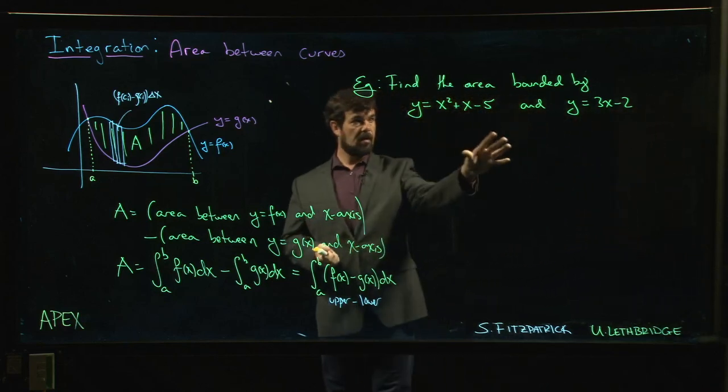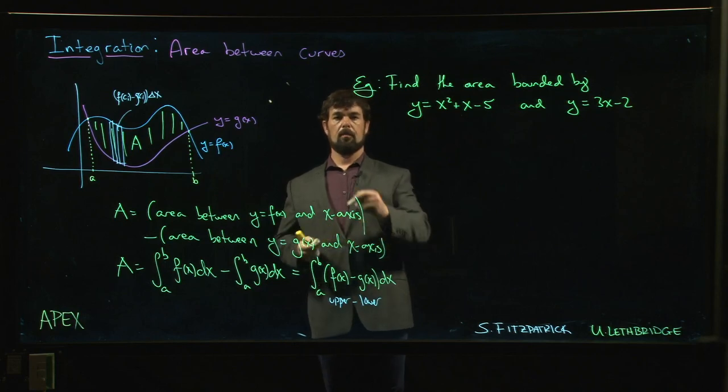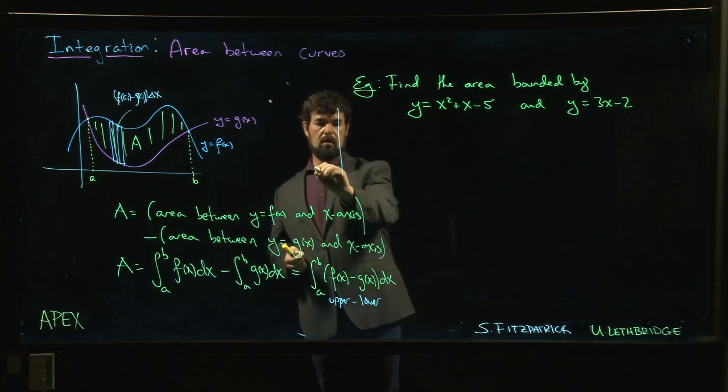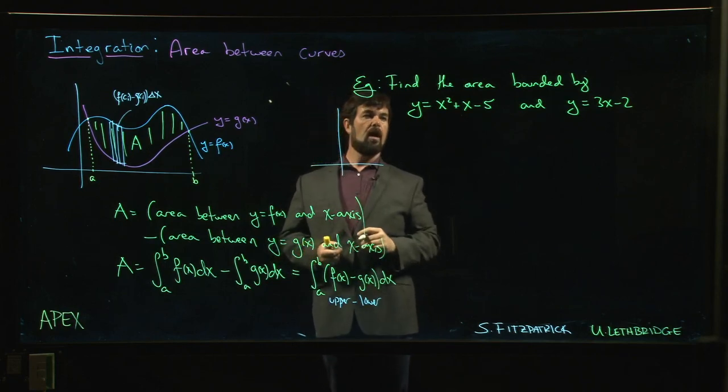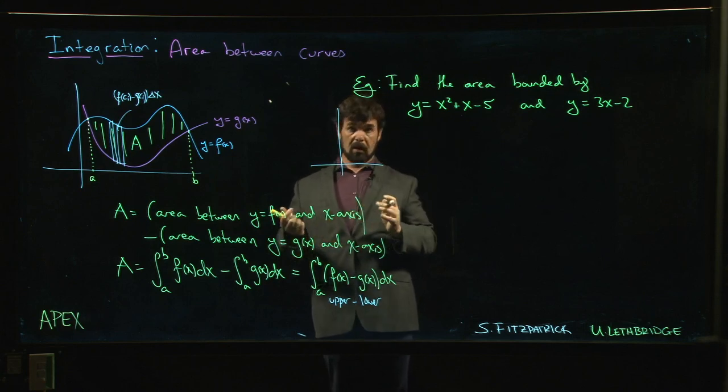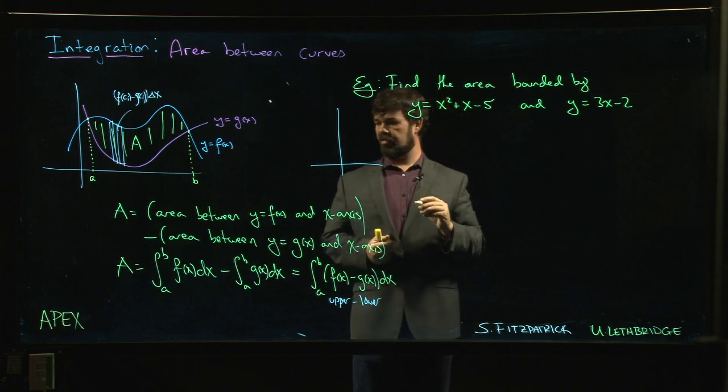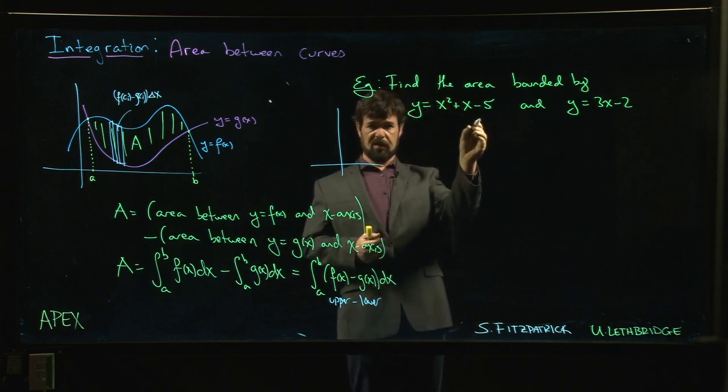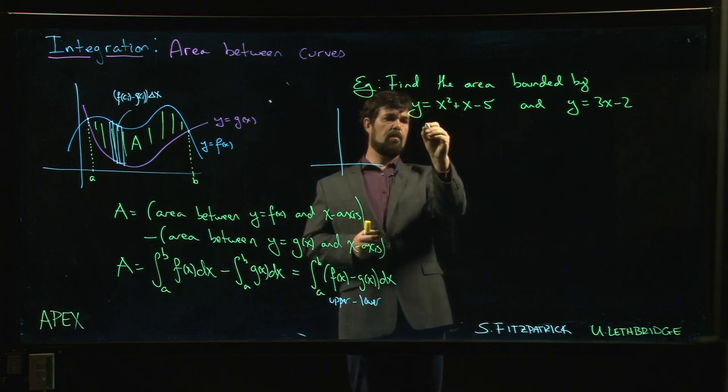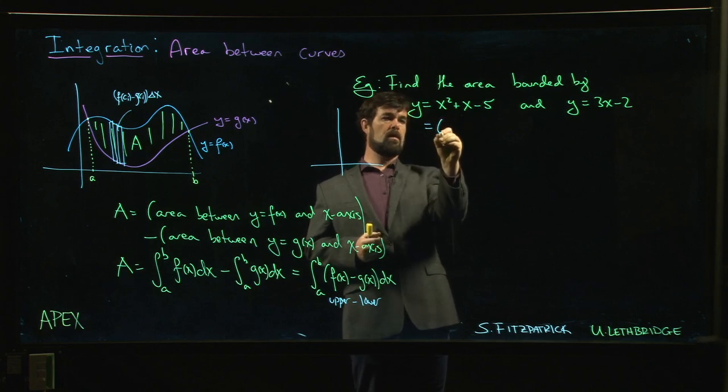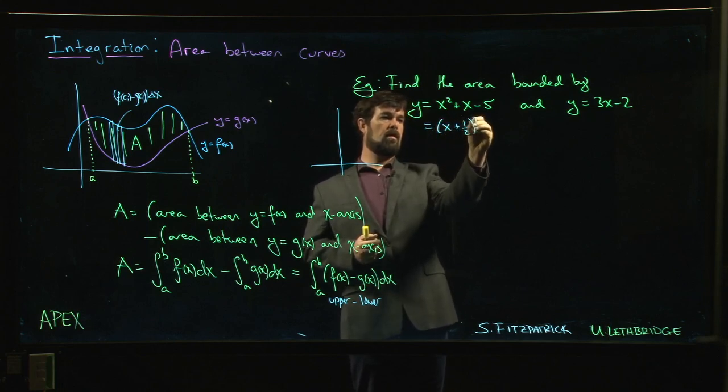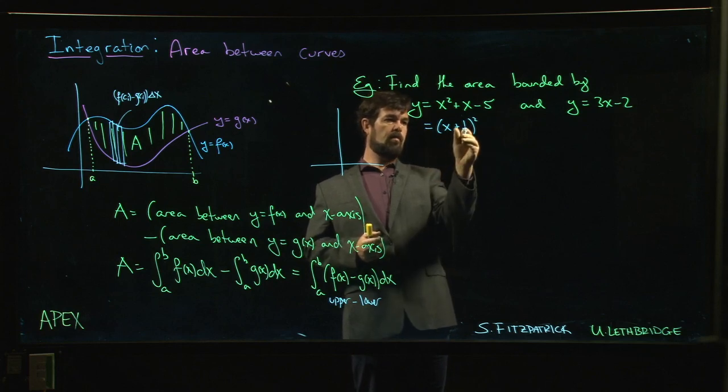Alright, so as promised we're going to look at an example. Let's sketch things out here. First, curve A is a parabola with no obvious zeros—we'd have to apply the quadratic formula to get the zeros. Let's complete the square: (x + 1/2)² putting that in there, we're adding a quarter, so we have to take that off.